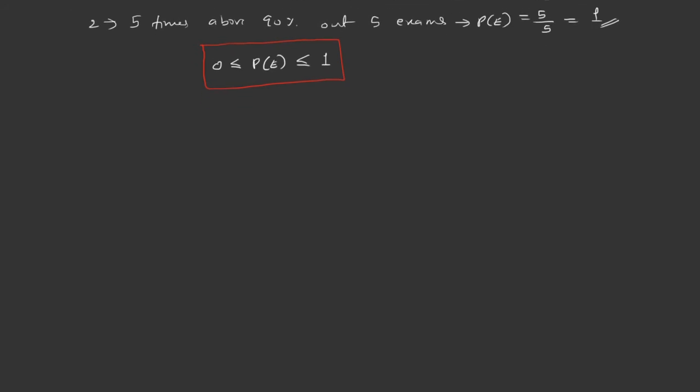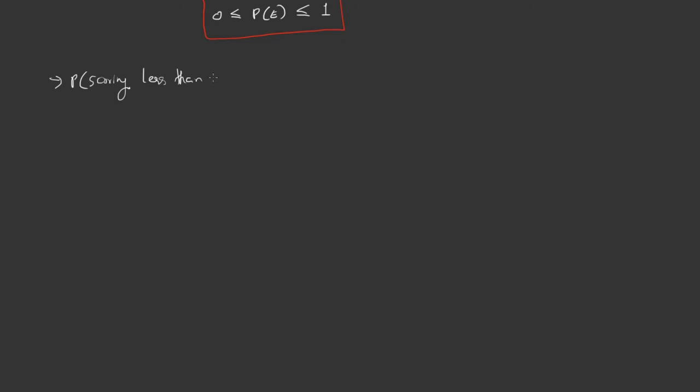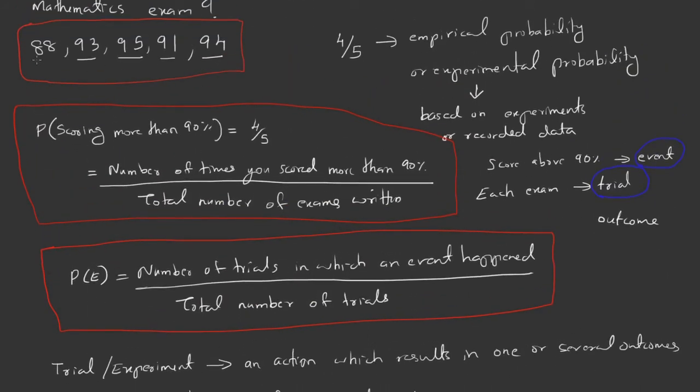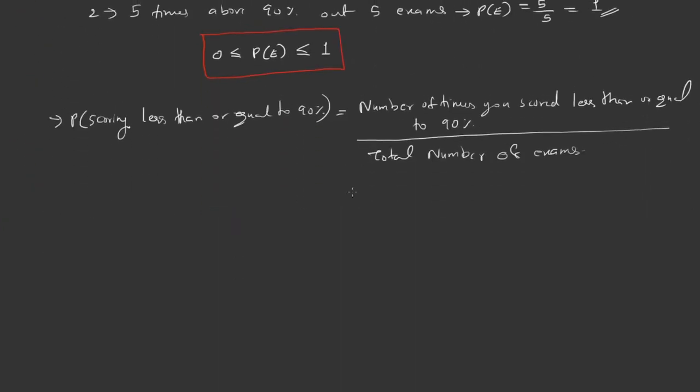Let us see the probability of scoring less than or equal to 90 percent. I can write it as the number of times you scored less than or equal to 90 percent divided by total number of exams. From our example, the number of times is one and total exams is five. So probability is 1/5.